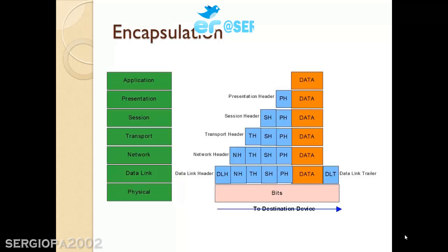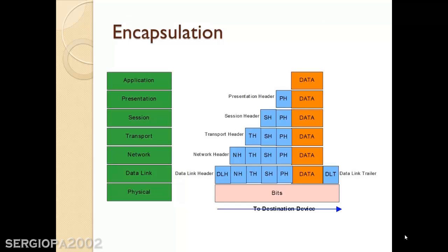When host A is sending a message to host B, the data starts from the application layer and goes all the way down to the physical layer, and then is transmitted to the other host. At the beginning, in the application layer, you have only the data. Then the data goes down one layer to the presentation layer, and that layer adds to the original data its header — or presentation header — which is an extra chunk of data added to the package with different information from each layer.